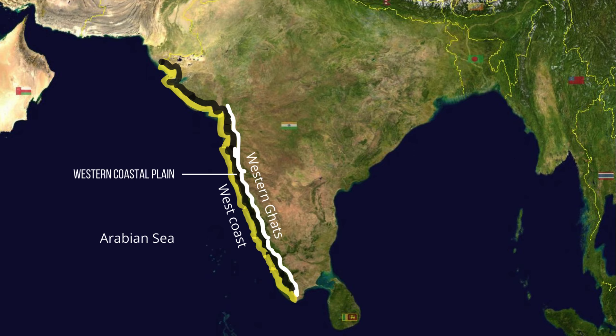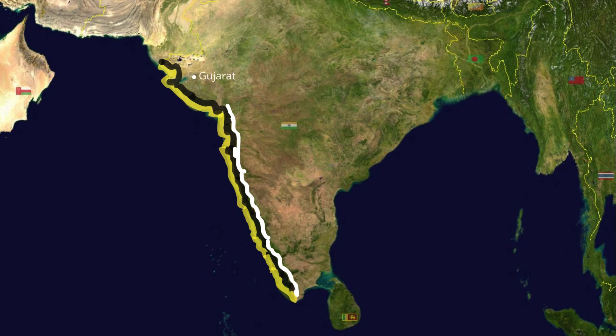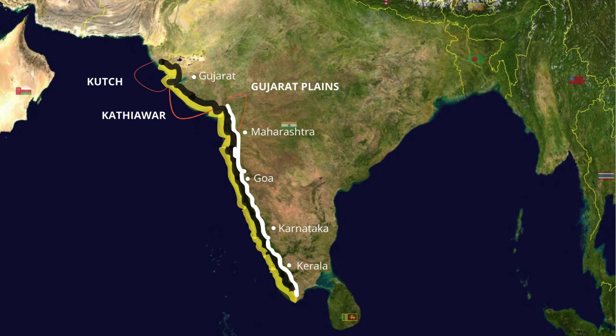The western coastal plain is a narrow strip of land measuring about 50 km in width, running between the west coast of India and the Western Ghats. The plains begin in Gujarat in the north and end in Kerala in the south, and include the states of Maharashtra, Goa and Karnataka. The western coast is divided into three regions: the Kutch and Kathiawar coast in Gujarat, the Konkan coast, and the Malabar coast.